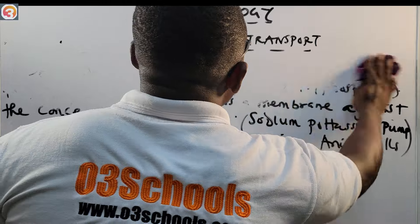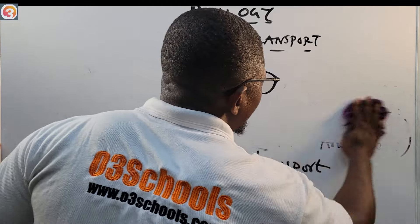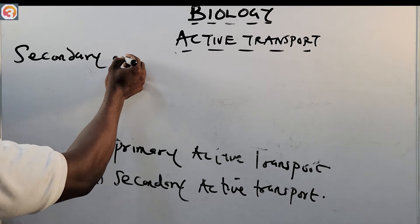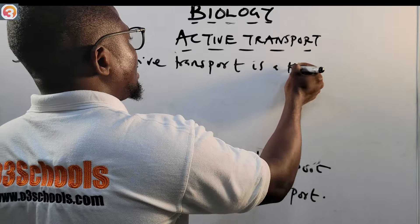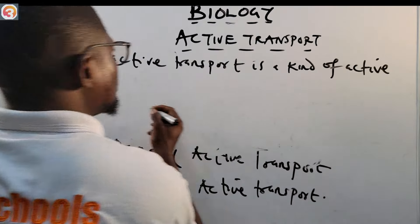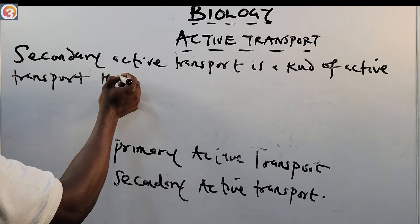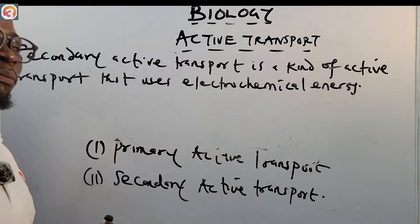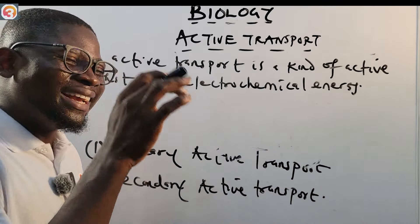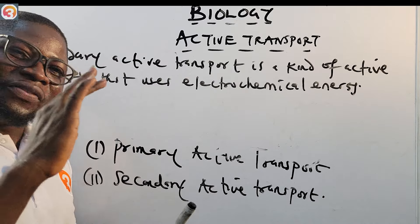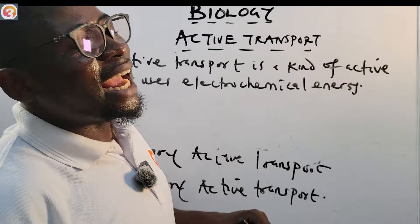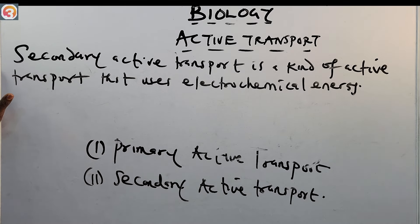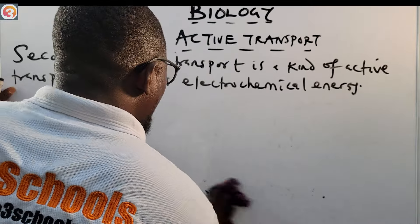Now let's talk about secondary active transport. The secondary active transport is a type of active transport that uses electrochemical energy. The molecules move in the direction of increasing electrochemical potential.